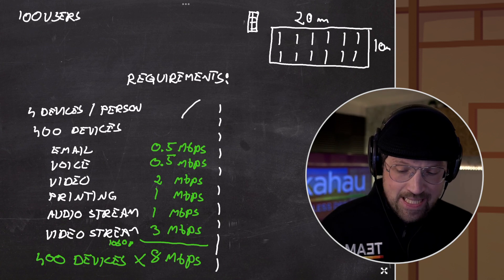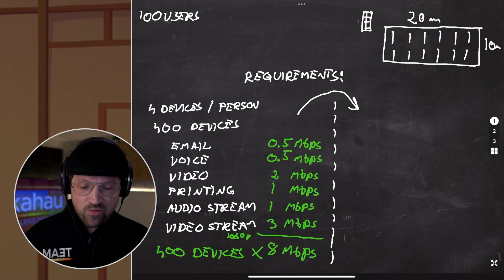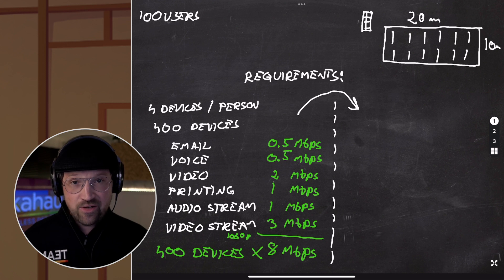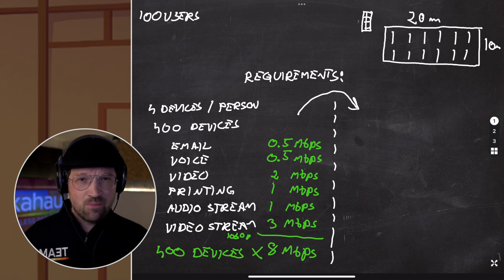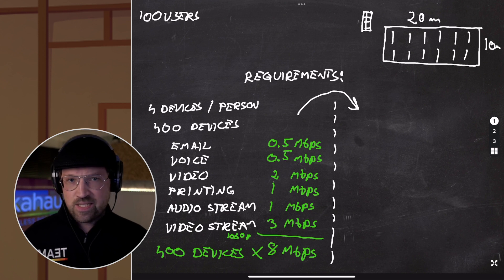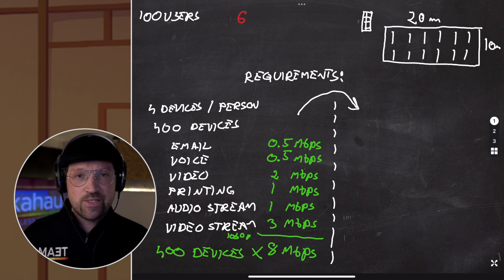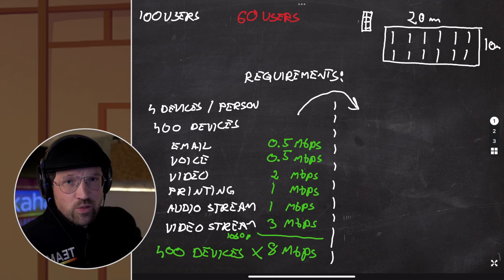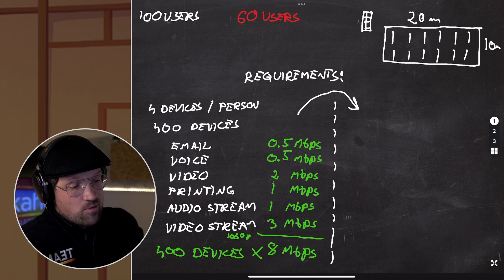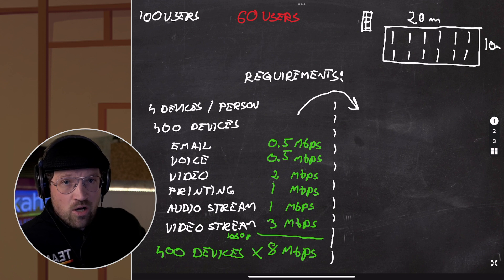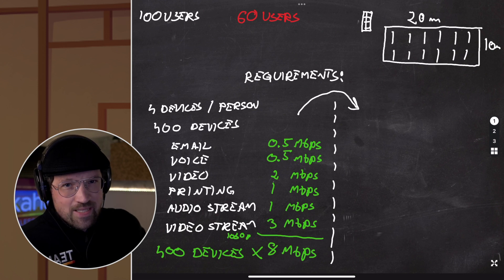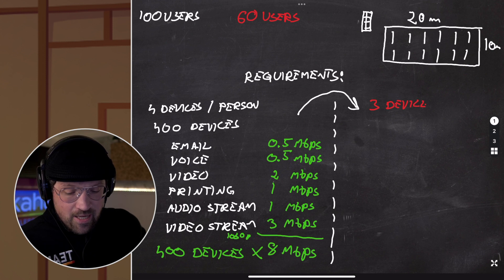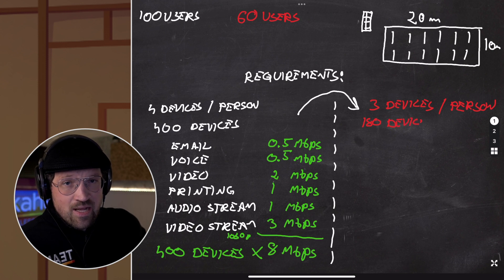Now let's translate those requirements into a more practical approach. Out of 100 users, how many will actually be in the office? Maybe 60 — some will be grabbing a coffee, in the bathroom, or working remotely. And out of four devices per person, how many will be unlocked and actively used at the same time? Maybe two or three, not four. So let's say three devices per person: three times 60 users gives us 180 devices, which sounds a lot more practical.